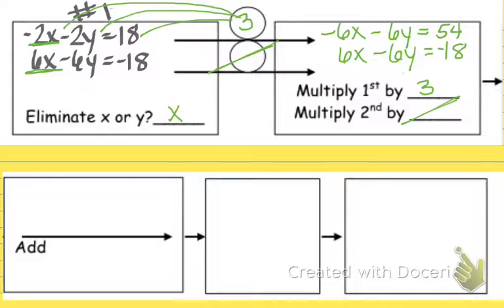Okay, again, all I did was I took that 3, and I multiplied everybody in that first equation by 3, because I needed a number that would allow me to cancel out those x's to eliminate them. So I'm going to rewrite my problem down here. I got negative 6x minus 6y equals 54, and I've got 6x minus 6y equals negative 18. Alright, and this is for me to add.